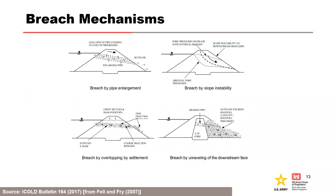Fell and Fry schematically showed four breach mechanisms associated with internal erosion: gross enlargement of a pipe or concentrated leak (upper left), overtopping due to crest settlement or sinkhole development (lower left), sloughing or unraveling of the downstream face (lower right), and slope instability (upper right). For most embankment types and potential failure modes, the likelihood of breach development will be dominated by one or two of the potential breach mechanisms. Most will eventually lead to overtopping.